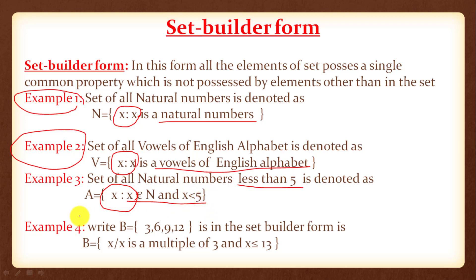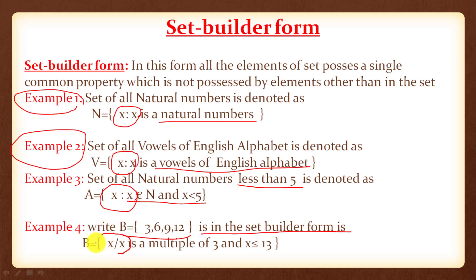Example 4: write the set B = {3, 6, 9, 12} in set builder form. The set B = {x such that x is a multiple of 3 and x ≤ 12}.